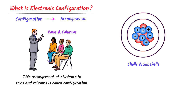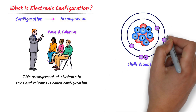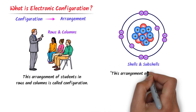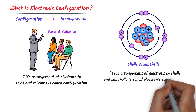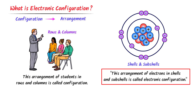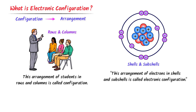For example, the K shell can accommodate only two electrons, the L shell can accommodate eight electrons, etc. This arrangement of electrons in shells and sub-shells is known as electronic configuration. Just remember that electronic configuration is the arrangement of electrons.